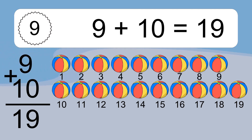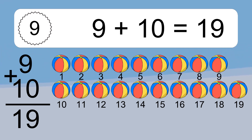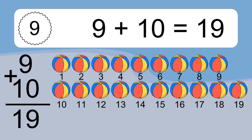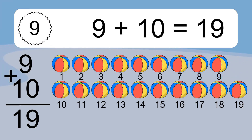Let's count it. 1, 2, 3, 4, 5, 6, 7, 8, 9, 10, 11, 12, 13, 14, 15, 16, 17, 18, 19.